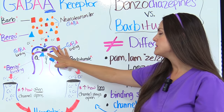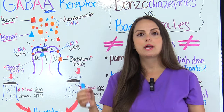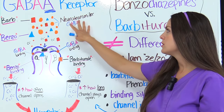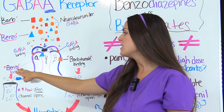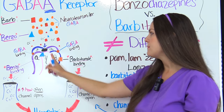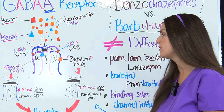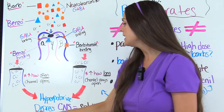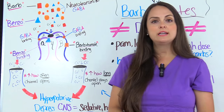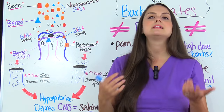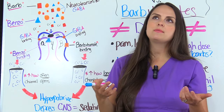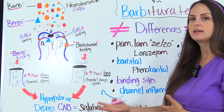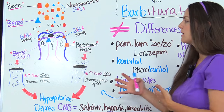Whenever binding occurs with GABA and with the benzo at its site, the channel in the middle opens up and chloride enters into the cell, hyperpolarizing it. This decreases its firing potential because GABA is an inhibitory neurotransmitter — it inhibits and impedes that message from being sent. So we depress our central nervous system, and hence we get sedative, hypnotic, and anxiolytic effects on the body.